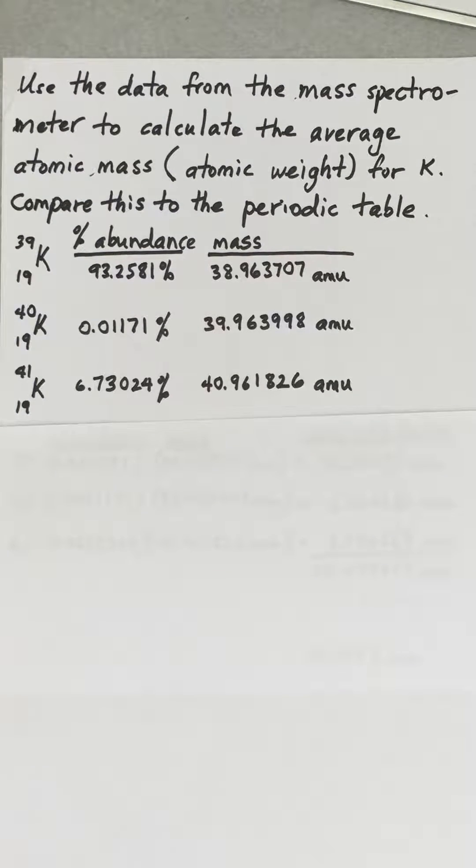So we're going to learn how to calculate the atomic weight, also known as the average atomic mass. The example we're going to use will be for potassium.